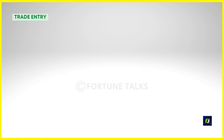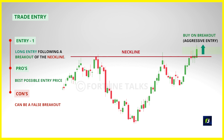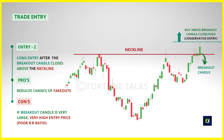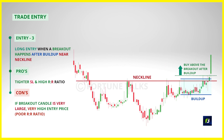The most aggressive entry for the inverse head and shoulders is when the price breaks above the neckline or resistance. Wait for the breakout candle to close above the neckline, then take a long entry above the close price or the high price of the breakout candle. The advantage is that you enter the trade very early and get the best possible entry price, but the main drawback is that the price could reverse and give a false breakout, hitting your stop loss.